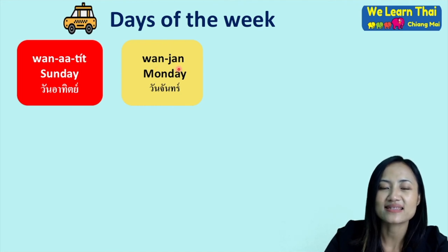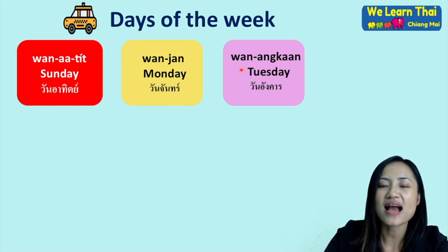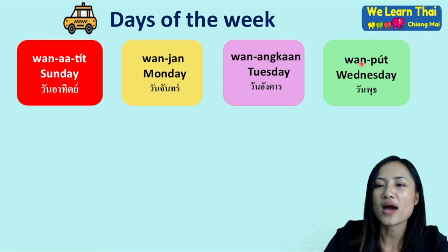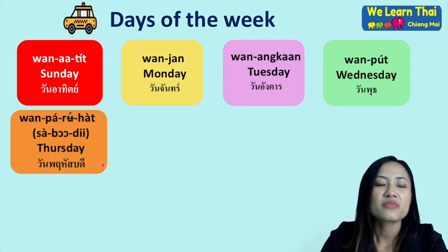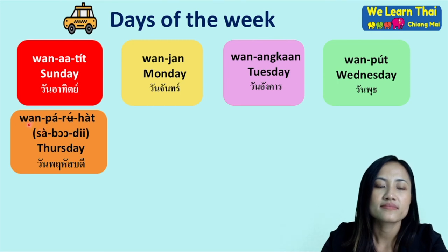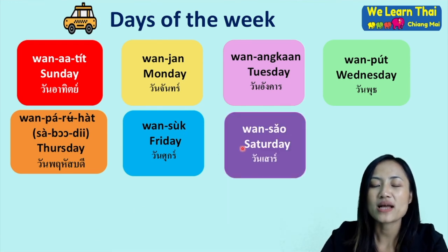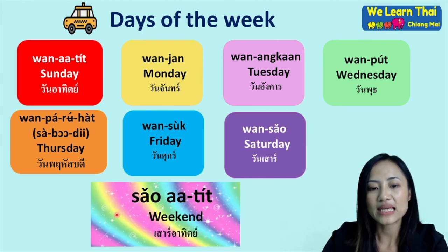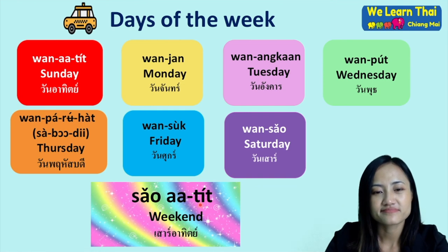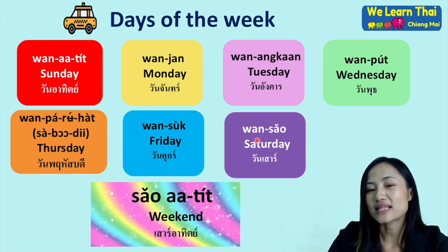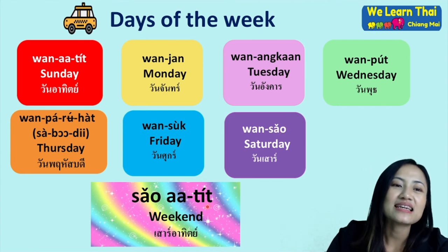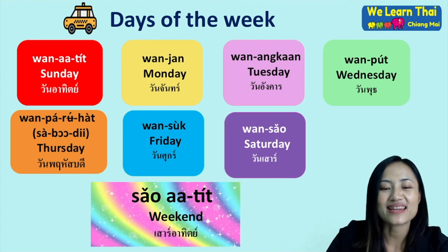Now the days of the week: Monday is วันจันทร์; Tuesday is วันอังคาร; Wednesday is วันพุธ; Thursday is วันพฤหัสบดี — or you can just say วันพฤหัส; Friday is วันศุกร์; Saturday is วันเสาร์; Sunday is วันอาทิตย์. Weekend is เสาร์อาทิตย์ — เสาร์ means Saturday, อาทิตย์ means Sunday, so เสาร์อาทิตย์ means weekend.